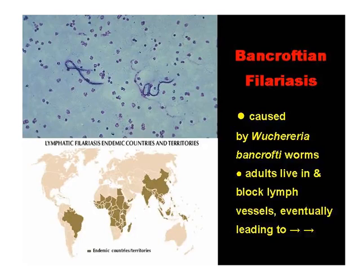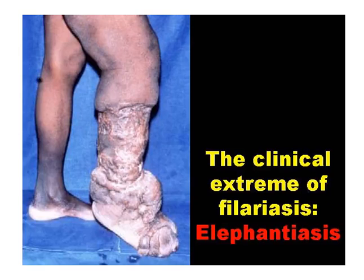Bancroftian filariasis is spread in most, but not all, parts of the developing world by culicine mosquitoes — the dirty water breeders. It's caused by the helminth Wucheraria bancrofti. The adult worms live in and eventually block the lymph vessels, and over time this leads to the clinical extreme of the disease, which is known as elephantiasis — gross swelling and deformity of the genitals and/or the lower legs and feet.